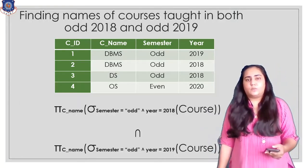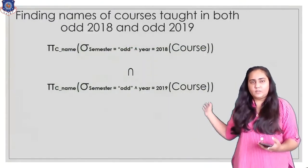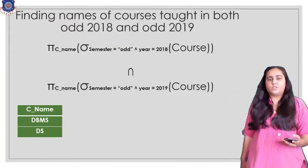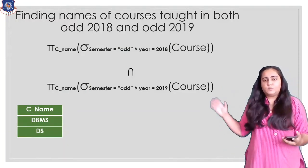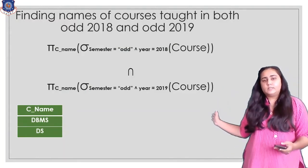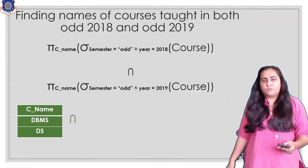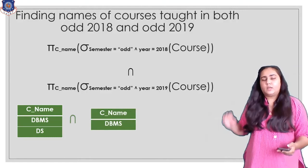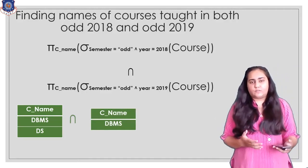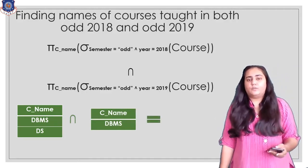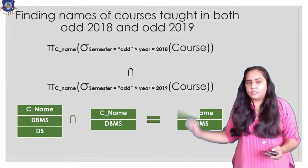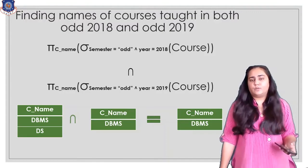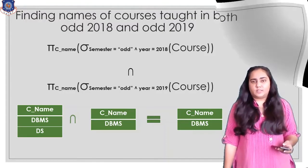Here's how this works in practice. The first query generates two course names: DBMS and DS. The second query generates only one course name: DBMS. When I take the intersection of the two, it results in only DBMS because that is common between the two. This is how you perform an intersection.